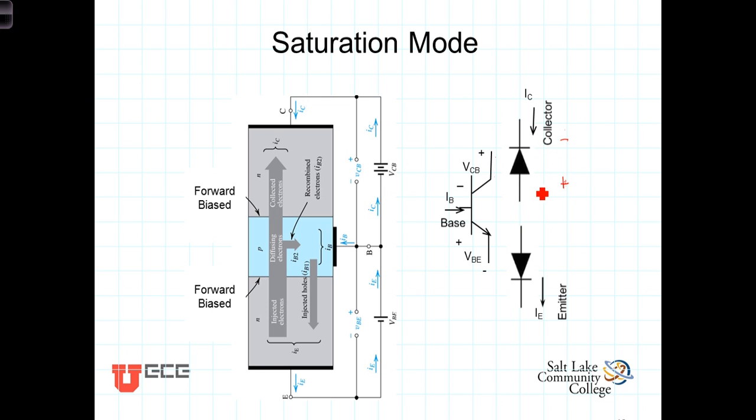We know from our study of the PN junction that appreciable current starts to flow when the forward biased voltage is around 0.45 to 0.5 volts.